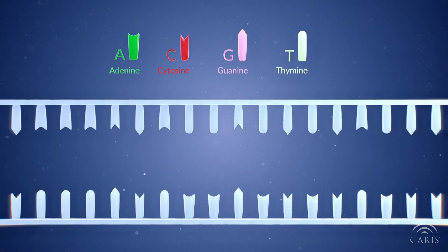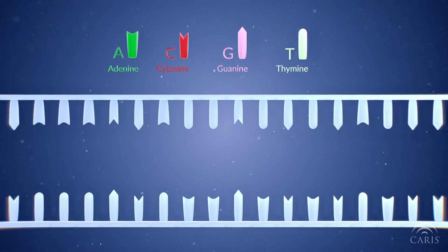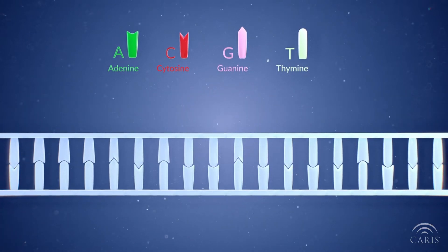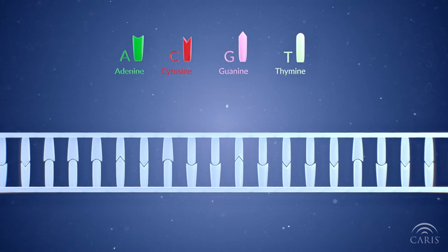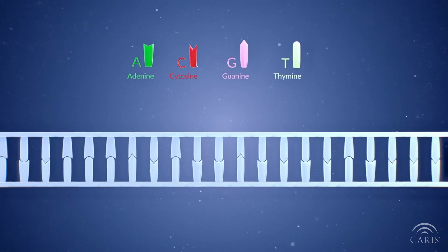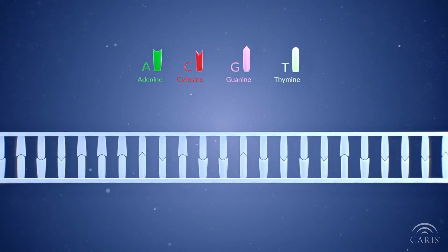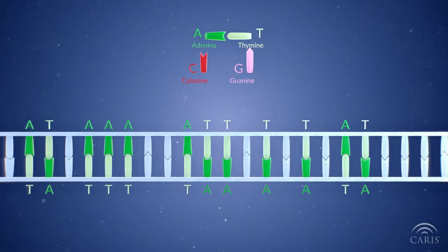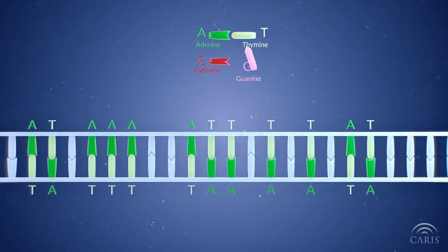The two strands of DNA are not identical. Rather, they complement one another. The complementary bases on either side of the DNA strand are called base pairs. Adenine is paired with thymine, and cytosine is paired with guanine.